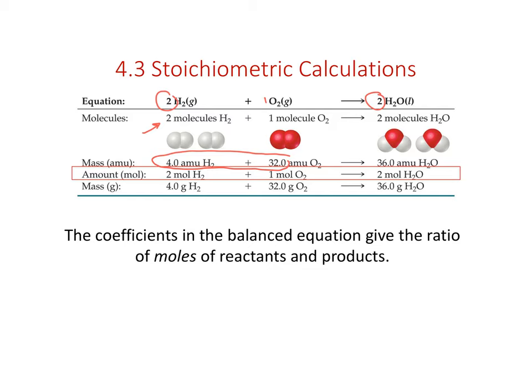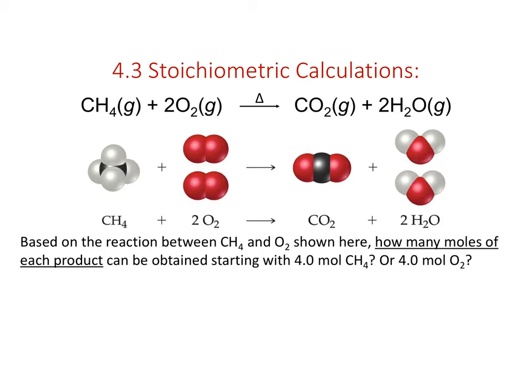That also relates to mass—I can go directly from molecular weight to molar mass given the coefficients. For example, one mole of methane reacts with two moles of oxygen to produce one mole of carbon dioxide and two moles of water. Based on this reaction, how many moles of each product could be obtained starting with four moles of methane?